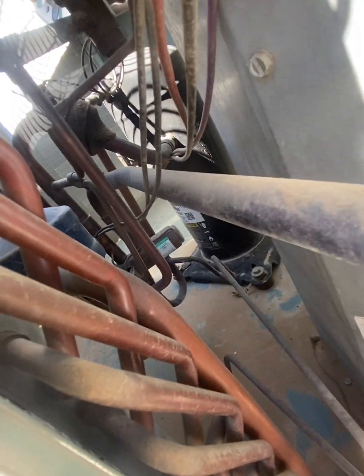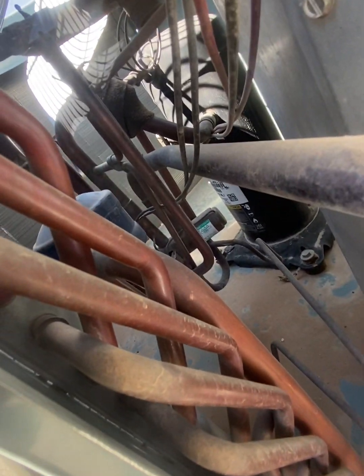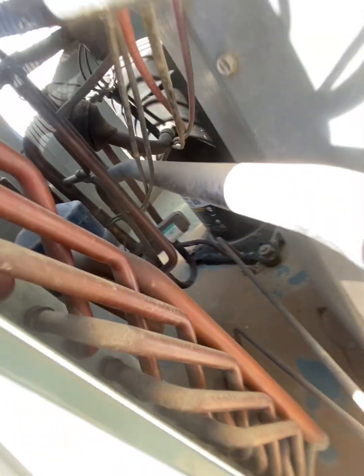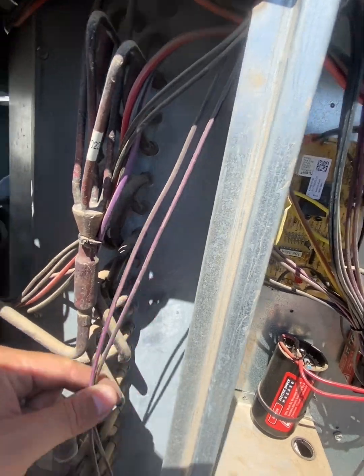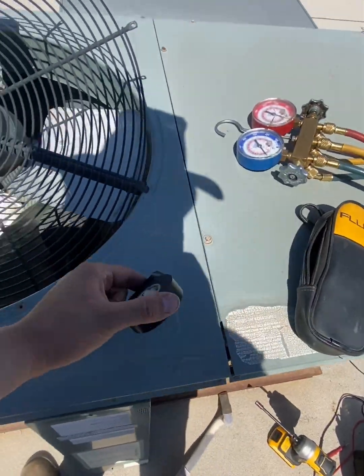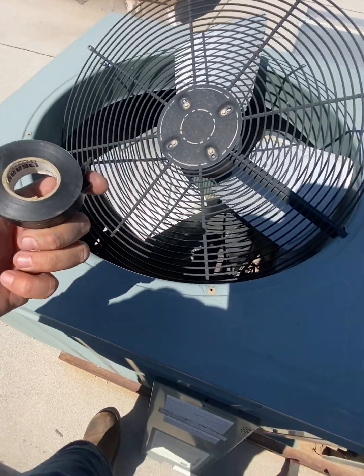Check all the low voltage wires: the reversing valve wires, the high pressure switch wires, and the low pressure switch wiring. Make sure that it's not rubbing against anything. Make sure that the insulation is not cracked or broken and it's not touching the copper. If you do find a damaged area, just go ahead and wrap it with electrical tape.